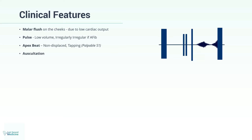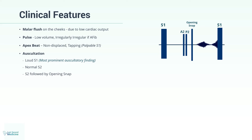On auscultation, the first heart sound, or S1, is loud, and it may be the most prominent auscultatory finding in mitral stenosis. The second heart sound, or S2, is normal. S2 is followed by the opening snap, which is due to the sudden opening of the stenotic yet pliable mitral valve.